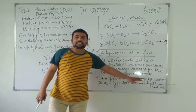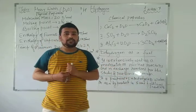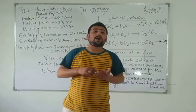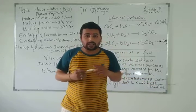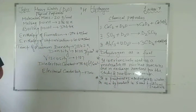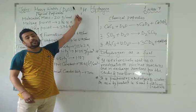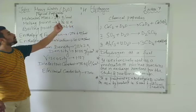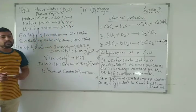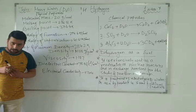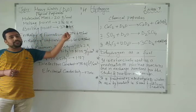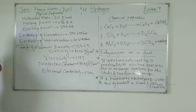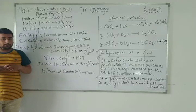Now, what are the physical properties of heavy water? Just as we studied water, hydrogen peroxide, and dihydrogen, similarly we will study the physical properties of heavy water. Molecular mass: since the atomic mass of deuterium is 2, for D₂O — 2+2=4, plus oxygen 16 — the molecular mass is 20 grams per mole. The melting point of deuterium oxide is slightly greater than water.